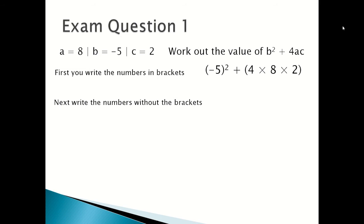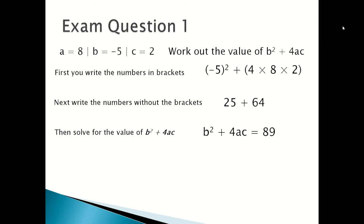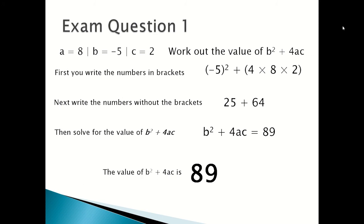Expanding gives 25 plus 64. Then you solve: b squared plus 4ac is equal to 89, so the value of b squared plus 4ac is 89.